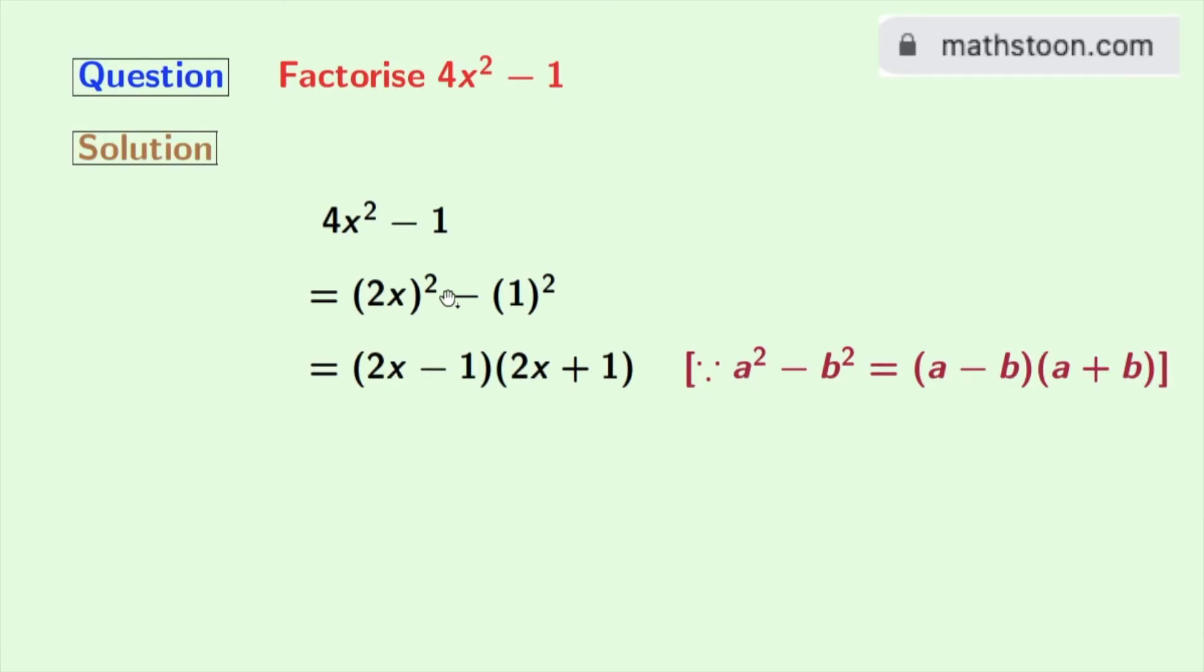Well, a is 2x and b is 1. So finally we get 4x² - 1 = (2x - 1)(2x + 1). So this is our desired factorization.